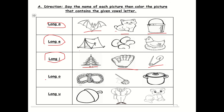Next, long O. Which picture has the long O sound — is it rope, mop, or pot? Next we have the long U sound. Which picture has the long U sound — is it nut, soot, or cub?